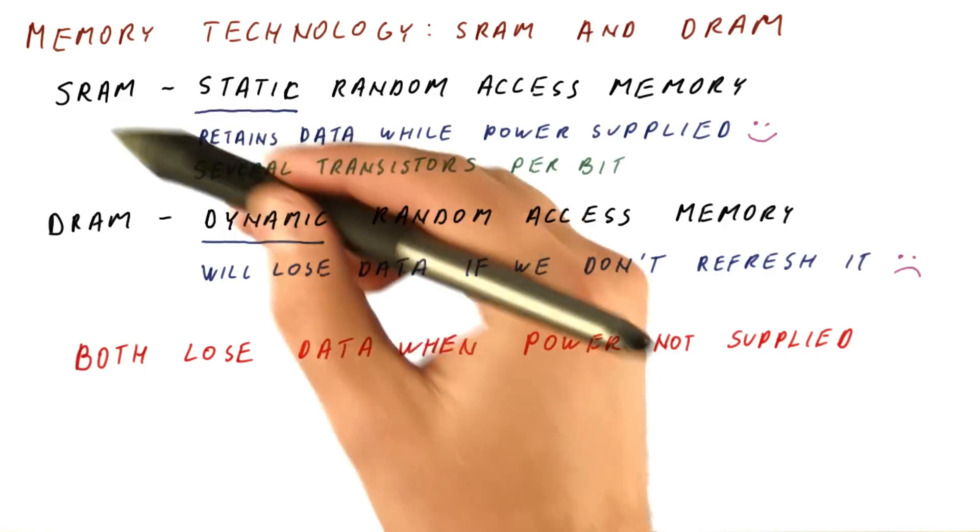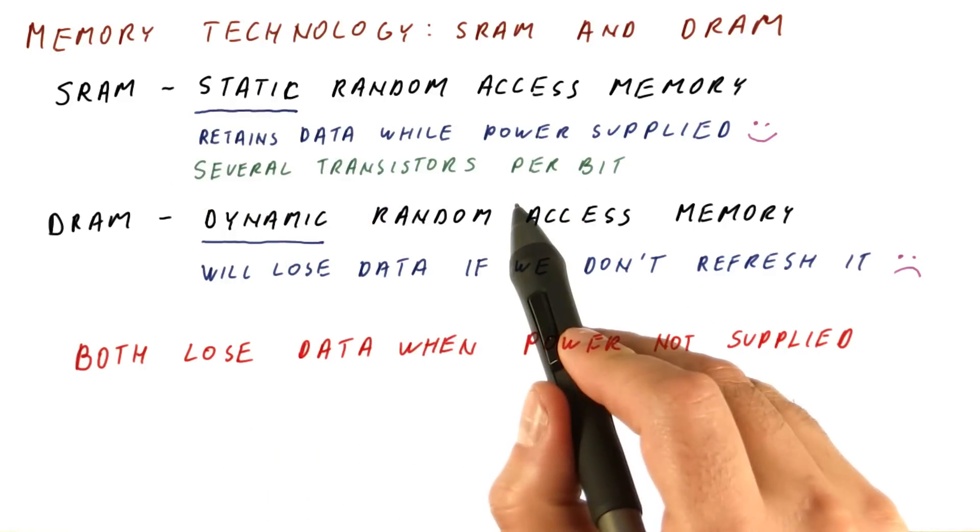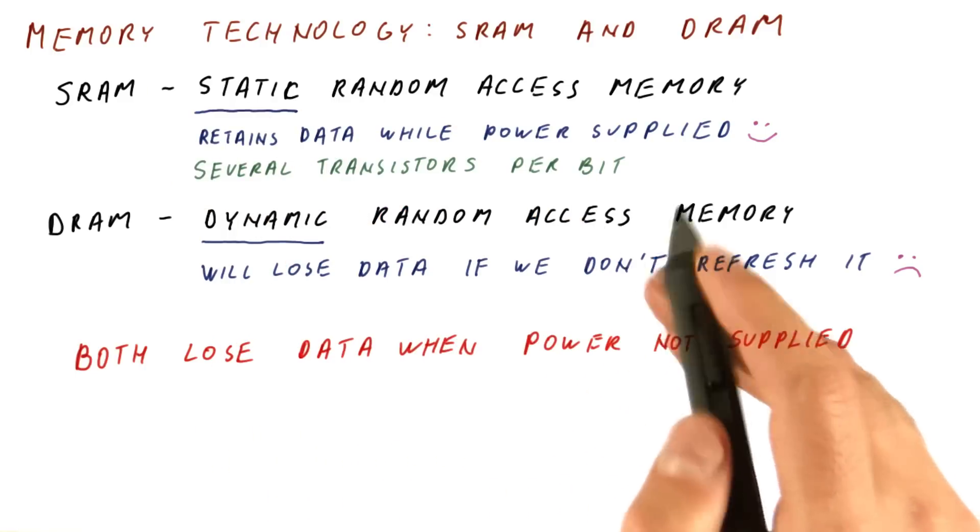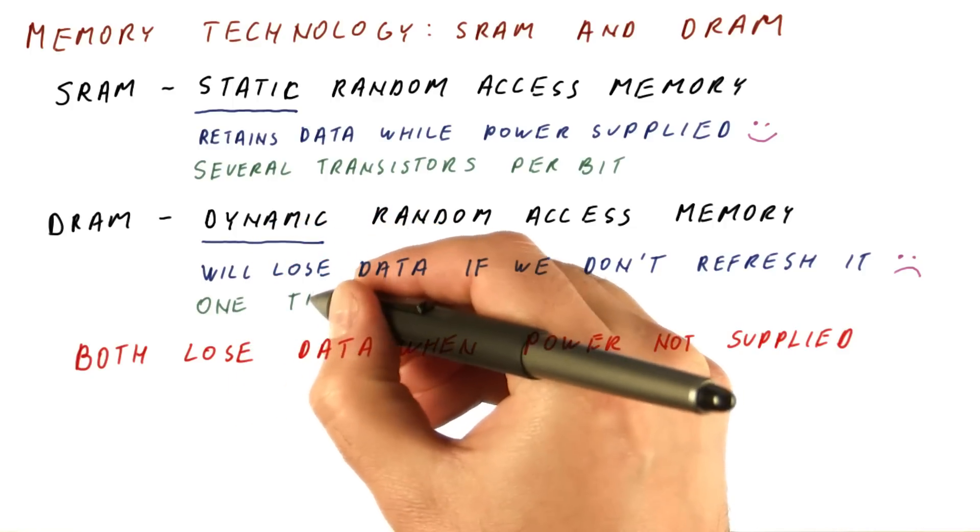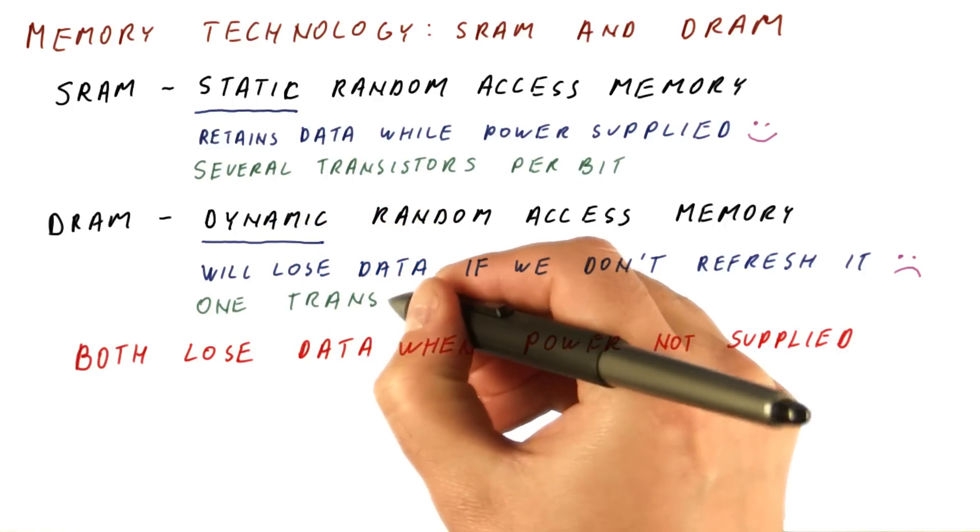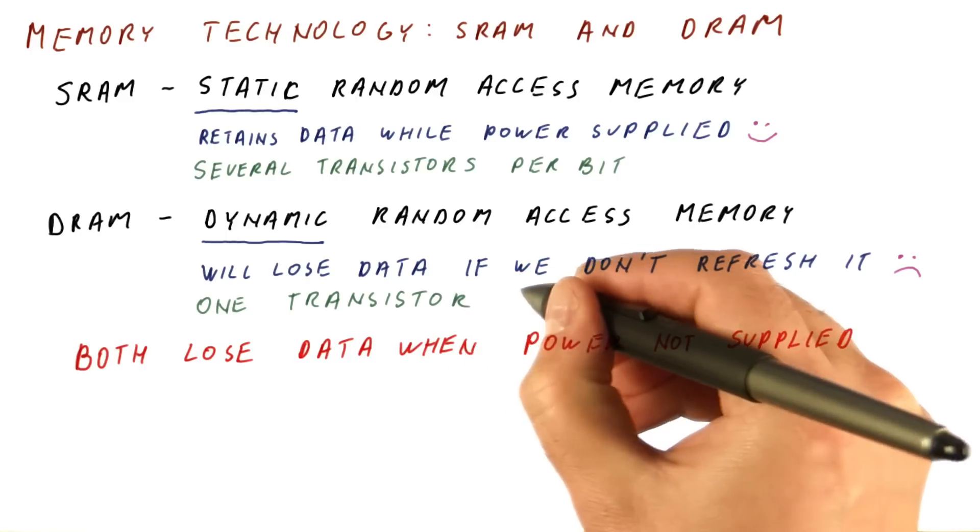The answer is that for SRAM, several transistors are needed for each bit. Whereas for DRAM, we only need one transistor per bit. Obviously, we can get a lot more DRAM per unit area than SRAM.